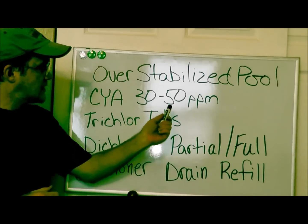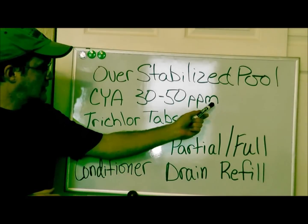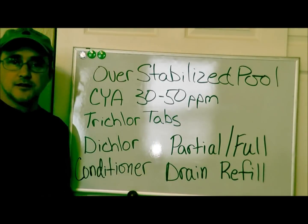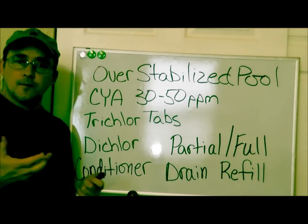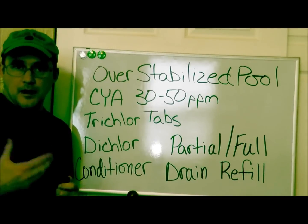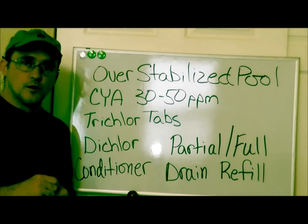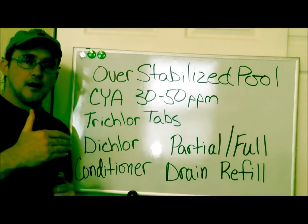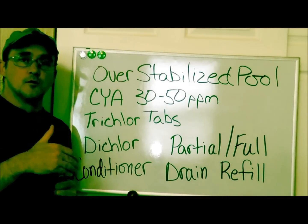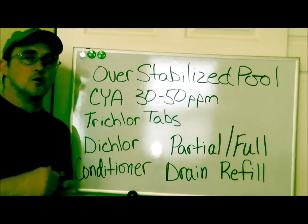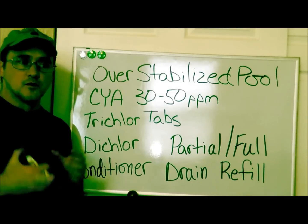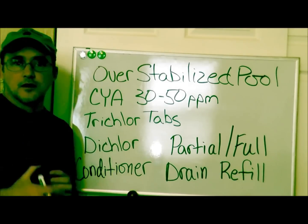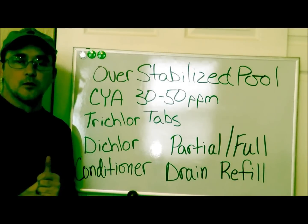What happens if the cyanuric acid gets too high? Well, high — in my opinion — is when you start getting into the 80, 90, 100 mark, especially over 100. That's really, really the breaking point.